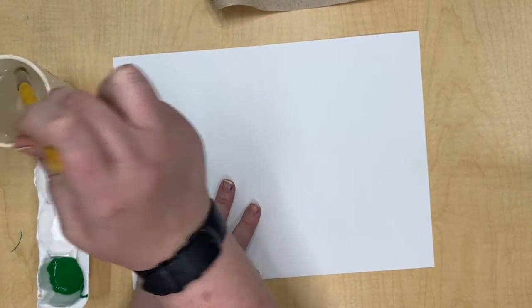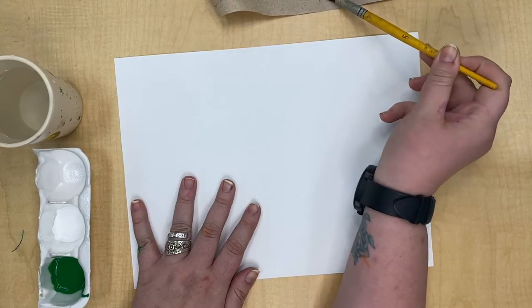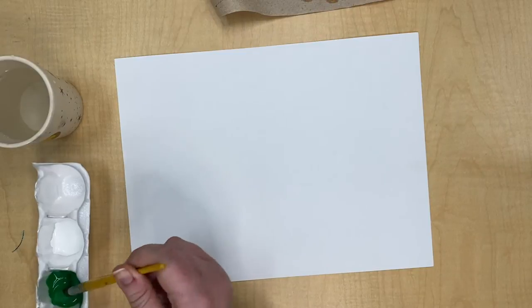The easiest way to get your paint to spread on your paper is to wet your paintbrush first. So we dab it on the paper towel to make sure it's not soaking wet.